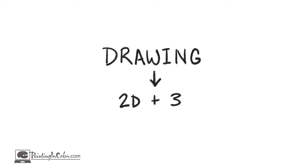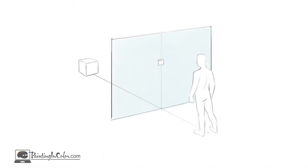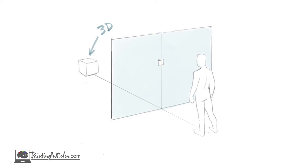There are both 2D ways of seeing and 3D ways of seeing. The difference can be understood by imagining a sheet of glass between ourselves and what we're looking at. When we ignore the sheet of glass and consider what we're looking at in a structural and spatial way, this is a 3D way of seeing. But when we analyze the flat shapes and linear patterns we would get if we trace the object onto the sheet of glass, we are seeing in a 2D way.